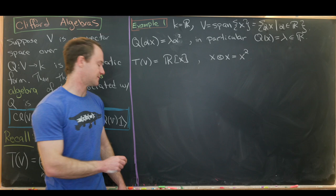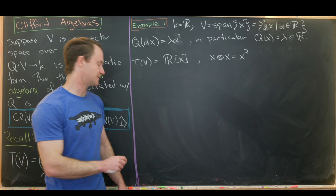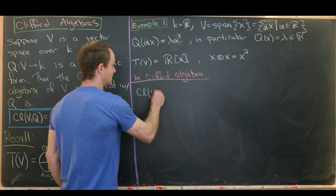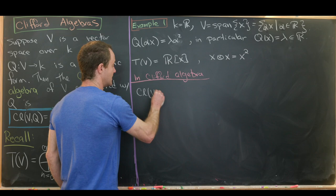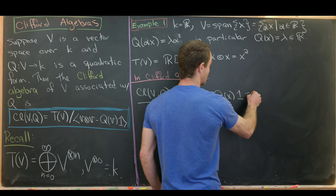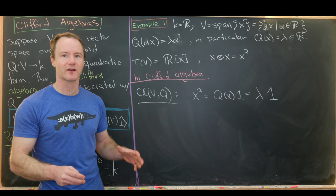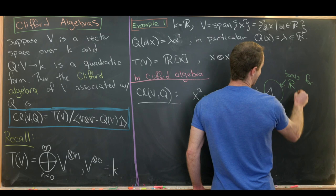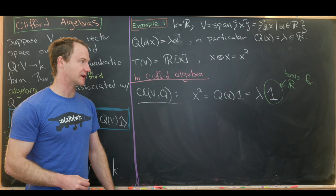Let's do a calculation in the Clifford algebra CL(V,Q). We'll have x² equal to Q evaluated at x times 1. That is equal to λ times 1, where 1 is the basis for ℝ as a vector space over itself. Essentially, any real number can be taken to be the basis vector for ℝ, except the number 0.